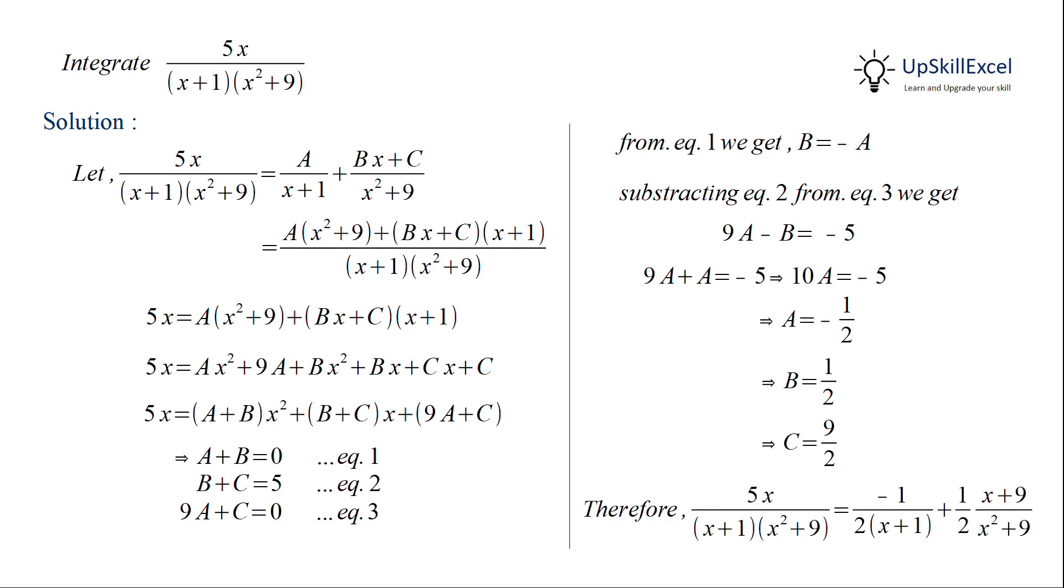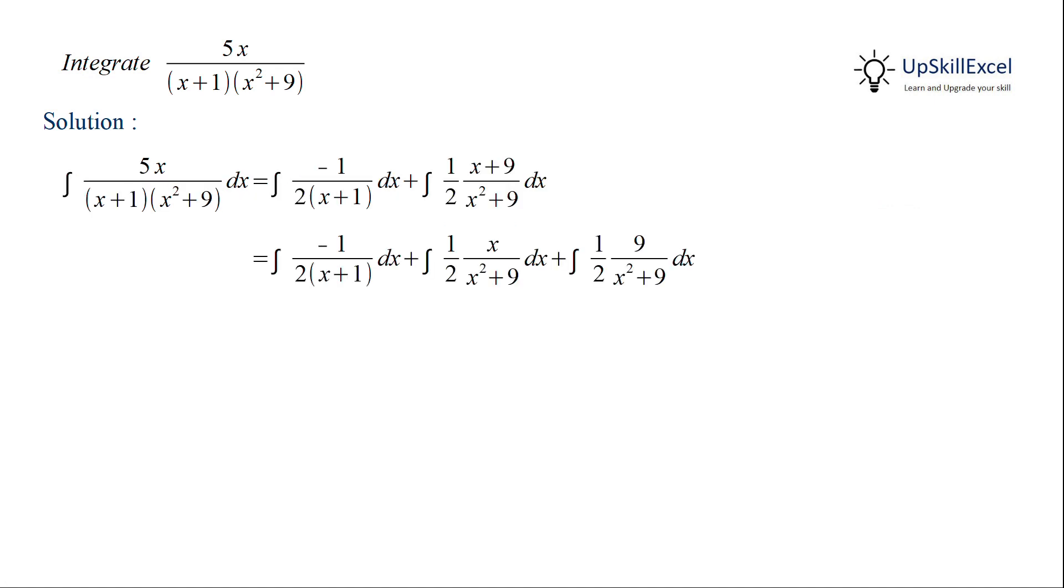So our function becomes minus 1 over 2 multiplied by x plus 1 plus half of x plus 9 over x squared plus 9. The second term can be further split into two terms that is x over x square plus 9 and 9 over x square plus 9.